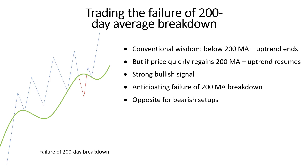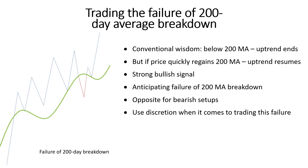Trading the failure of the 200-day moving average breakdown is an alternative way to engage with the markets rather than relying on traditional approaches. This way of trading often provides you with a strong idea of where price is heading, in most cases above or below levels where the trapped traders' stop loss orders would be resting. However, it does require some thinking outside the box, which is something needed in order to become successful over time.